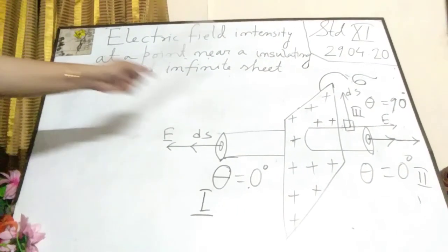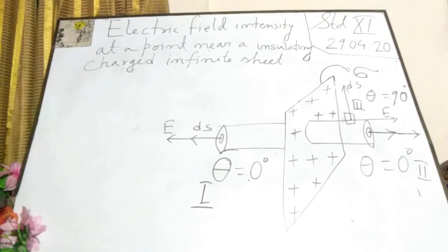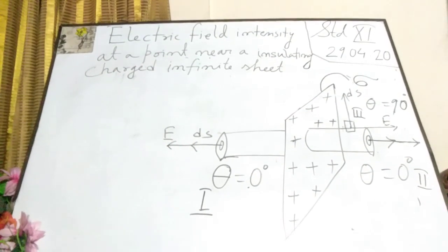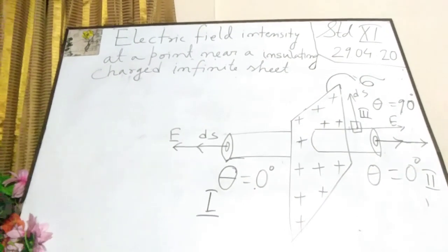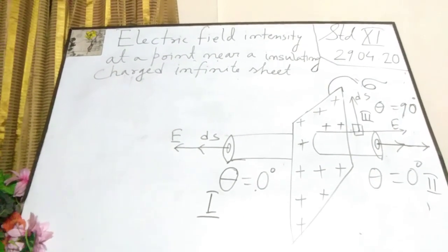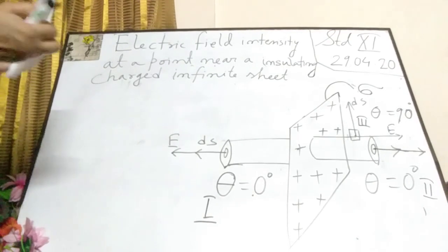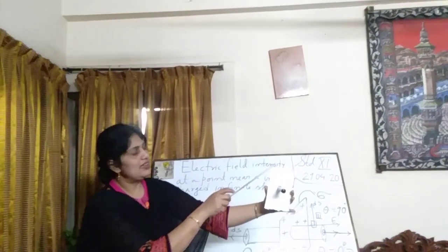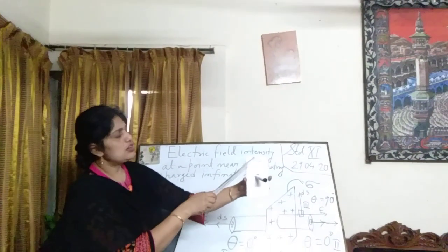If I want to find out the electric field intensity at that point very near to the sheet, I have to consider a Gaussian surface. You know, the Gaussian surface is symmetric and the electric field intensity at every point on the Gaussian surface is equal — has the same magnitude. The Gaussian surface is punched into the sheet. I have already made an example for that.